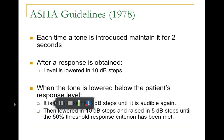you go down in 10 dB steps until the responses stop. So you would go from 30 to 20 to 10 to 0 decibels. If you don't get a response at 0 decibels, you go up in 5 dB steps until you get a response, and as soon as you get a response you go back down. This is called the threshold search — basically down 10, up 5 — until you get about a 50% response rate at the person's threshold.